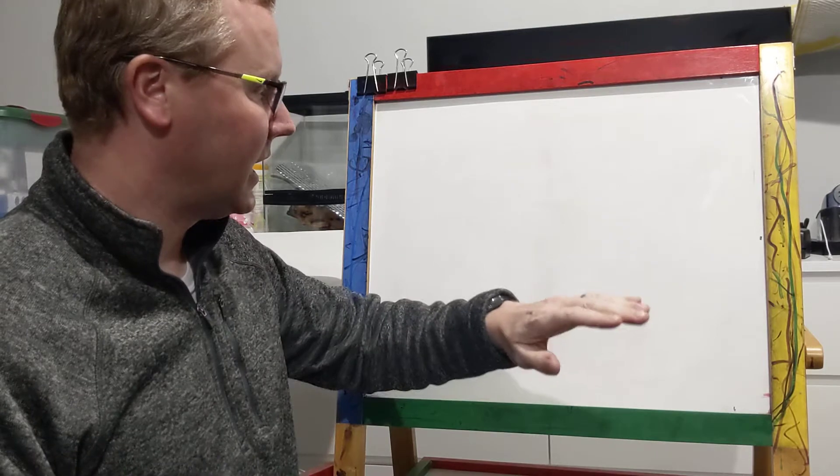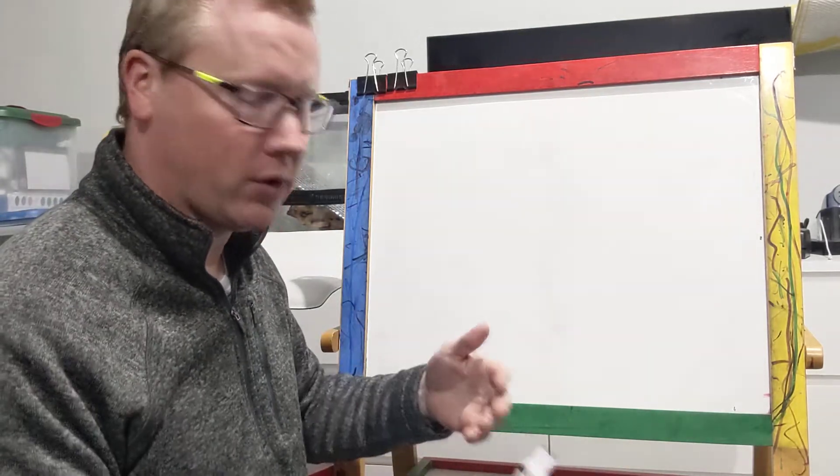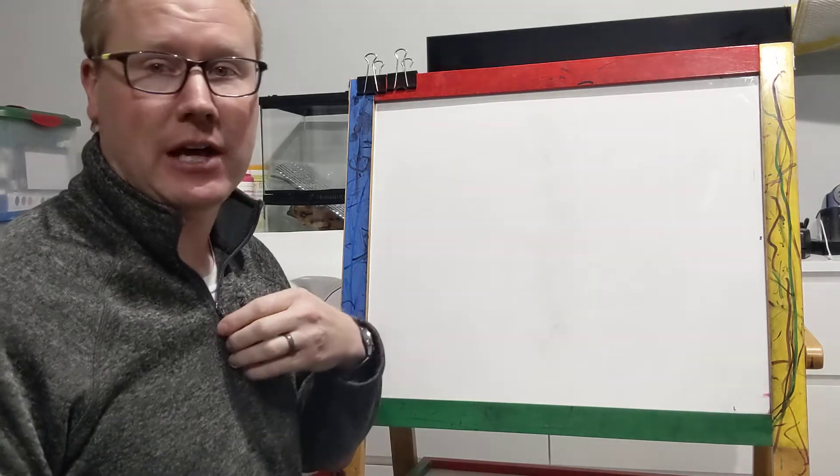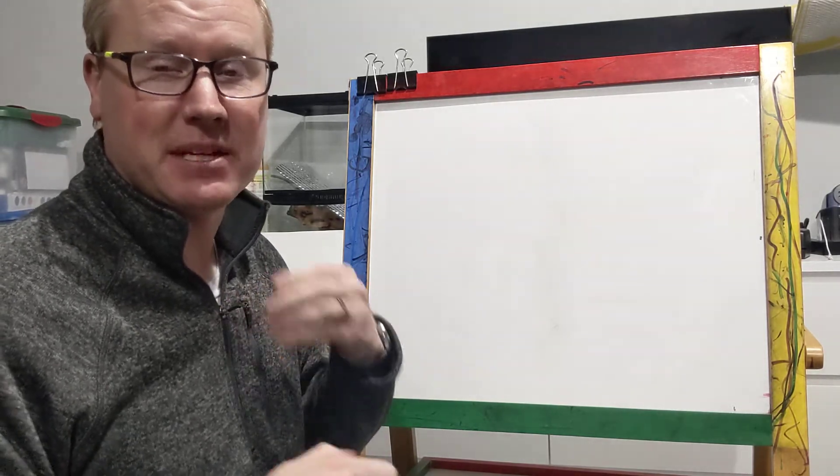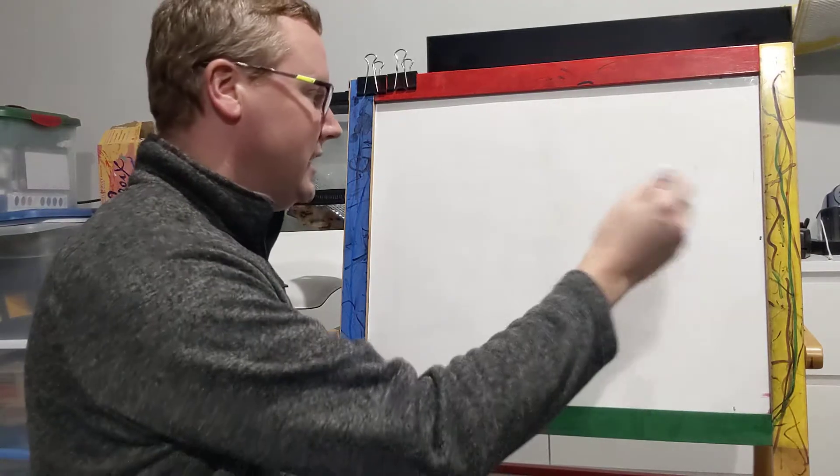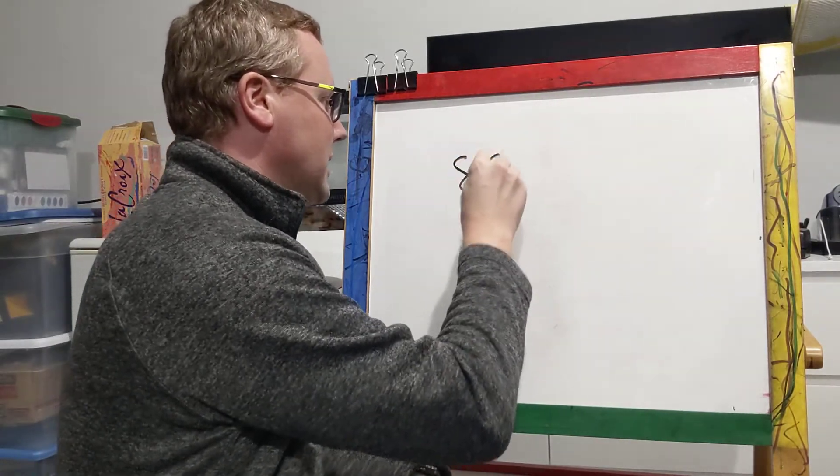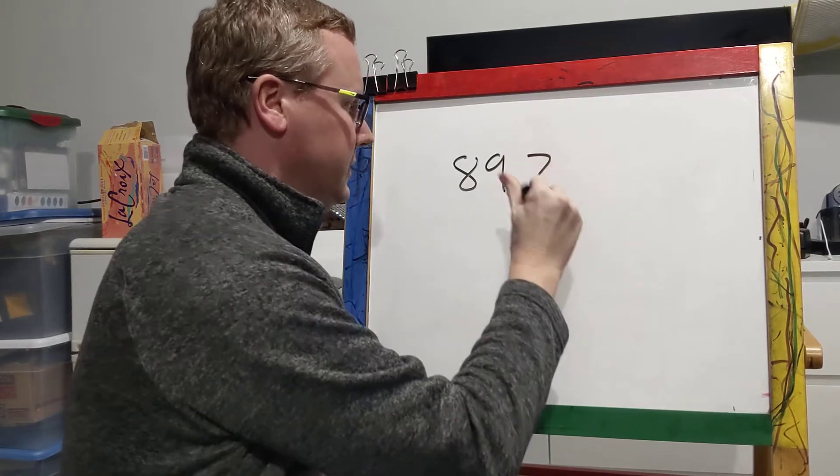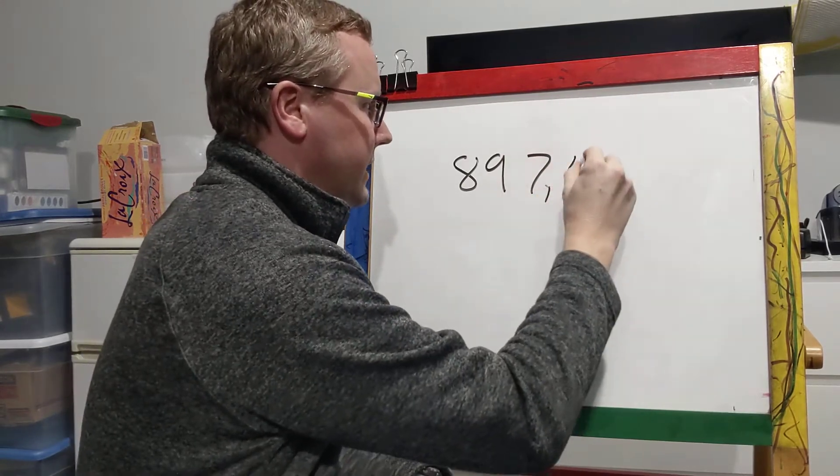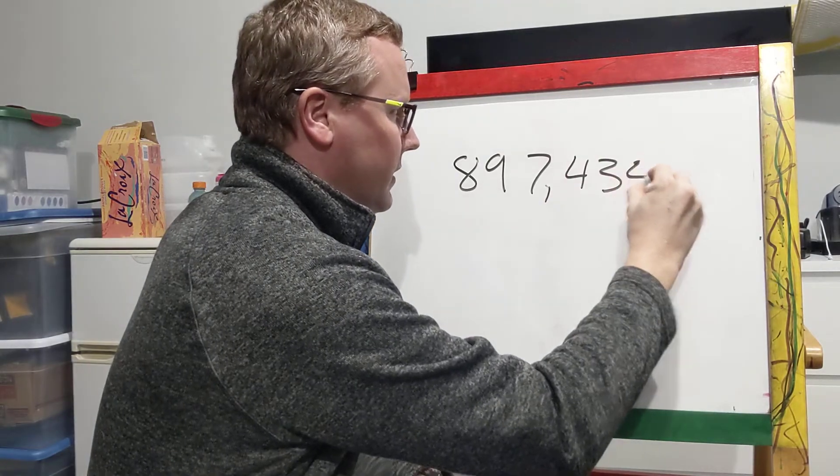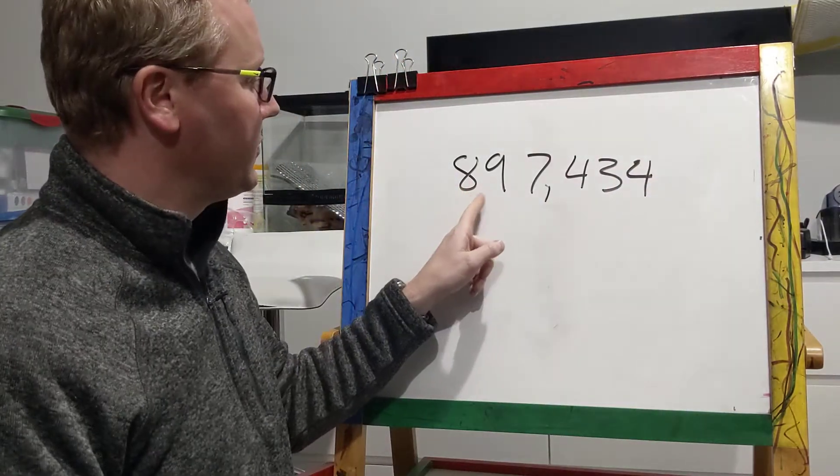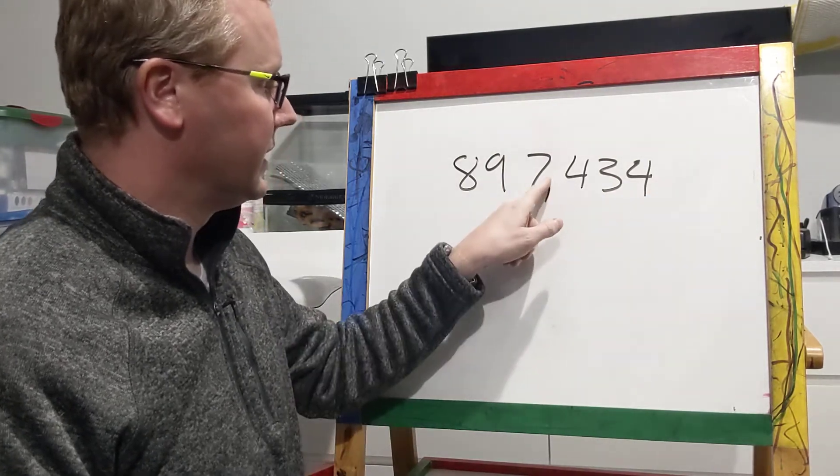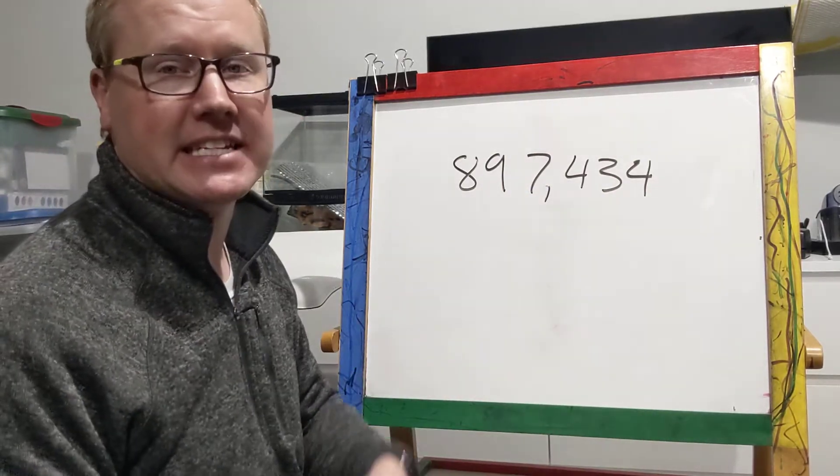Before we do rounding we need to know the biggest thing we need to know for rounding is when we're doing rounding, I'm gonna tell you sometimes a specific place value to look at. So we have to know place values first. So if we have this number and it is like this, 897,434, that is our number.